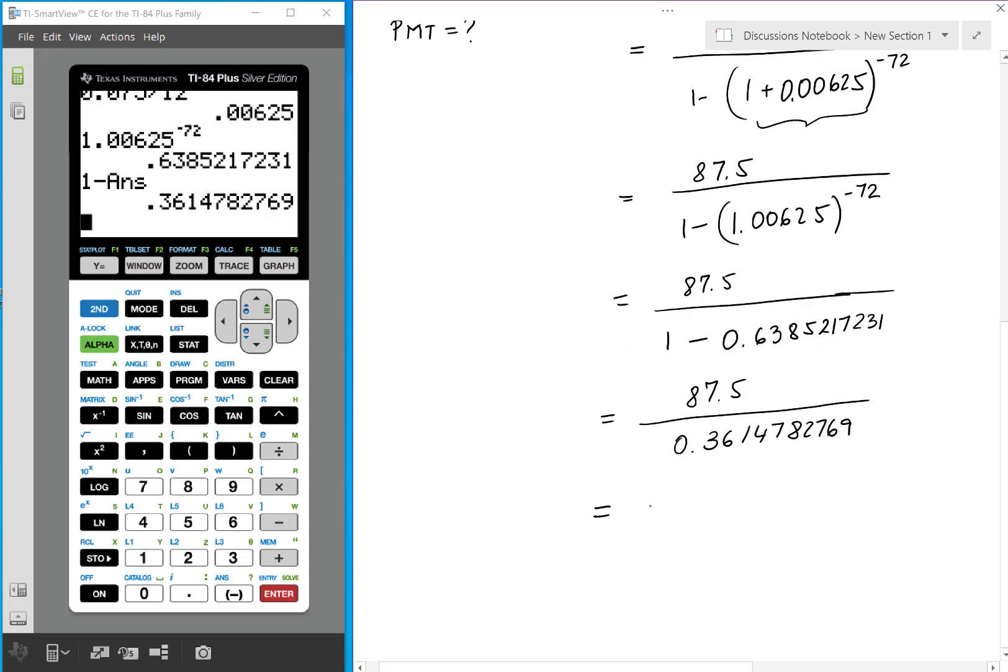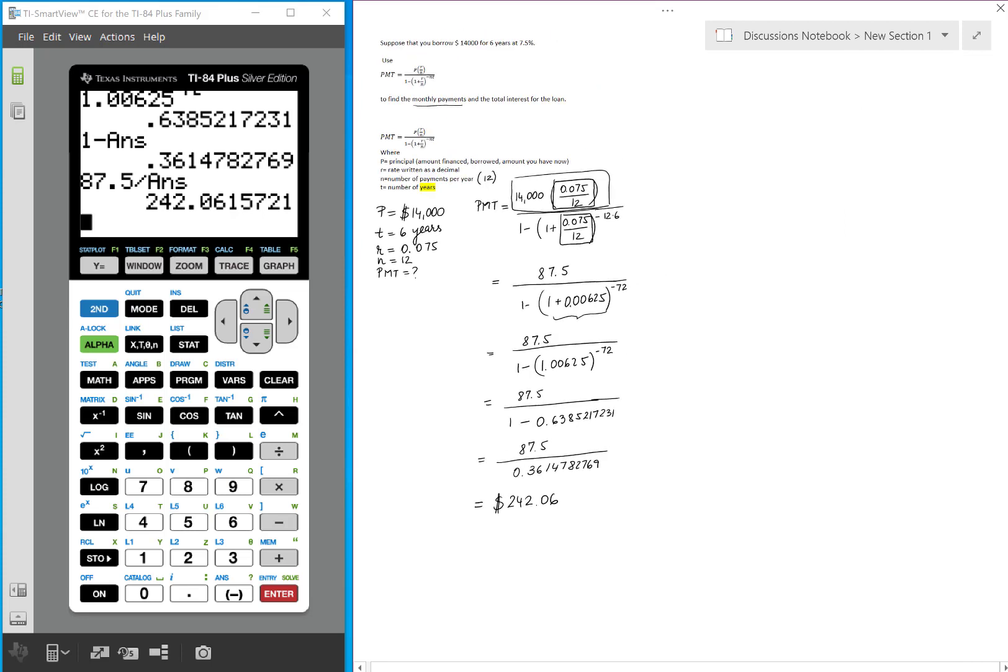So press enter and we get 0.3614782769. Which means 87.5 divided by the previous answer equals 242.06. So that is the payment. So if we want to find the monthly payment. For 6 years we have to pay 242.06.